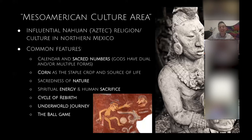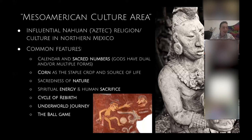Corn is the staple crop of Mesoamerica, so corn is always connected with human life and makes a very prominent and important appearance in the Popol Vuh. Mesoamericans believed that human beings were made from corn and that we basically return to the corn when we die. Nature in general is very sacred, and animals play the role of helpers of the gods and heroes in the Popol Vuh.